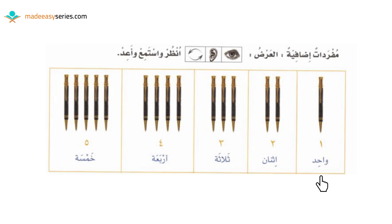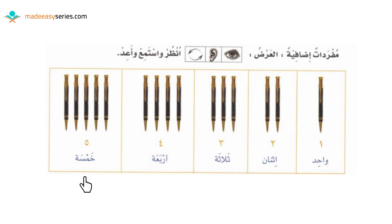We have a picture of one pen: واحد, which means one. Its shape is like number one but a little bent on the top. Number two is اثنان, which means two — similar to واحد but with a flick on the right side. Then ثلاثة, which means three — similar to two but with two flicks. Then أربعة, which means four. Then خمسة, which means five, similar to an oval shape.